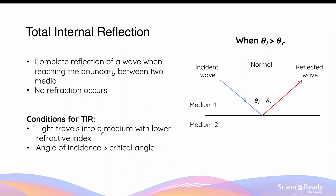In order for total internal reflection to occur, there are two main conditions. First, the light must travel into a new medium that has a lower refractive index than the initial medium — that is, the value of n2 must be less than the value of n1. The second condition is that the angle of incidence must be greater than a critical angle.